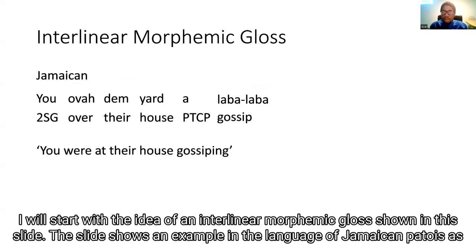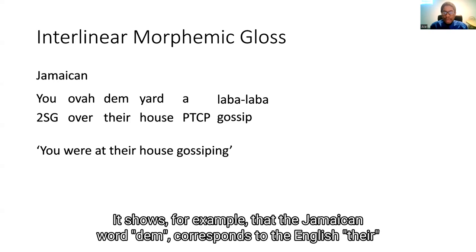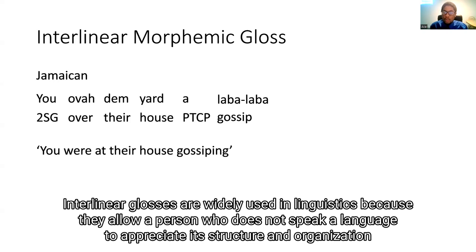I will start with the idea of an interlinear gloss shown in this slide. The slide shows an example in the Jamaican language, as that is something I speak. The Jamaican text is: 'You are at our house gossiping.' In between the source and target language is the morpheme-by-morpheme gloss. It shows, for example, the Jamaican word 'dem' corresponds to the English 'there.' Interlinear glosses are a widely used tool that allow a person, predominantly speaking English, to appreciate a language's structure and organization.